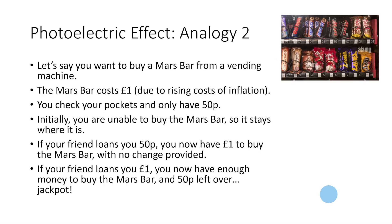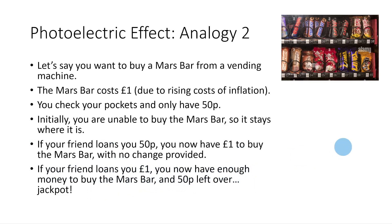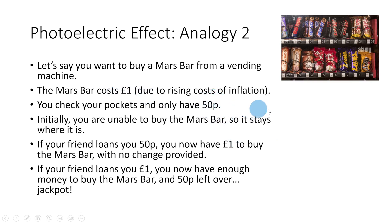The second analogy is the vending machine analogy. You want to buy a Mars bar costing £1. You only have 50p, so you can't buy it and it stays where it is. If your friend loans you 50p you now have £1 — just enough to buy the Mars bar with no change. The work function here is £1 — the minimum energy required to cause photoemission. If photon energy is less than the work function, no photoemission occurs.